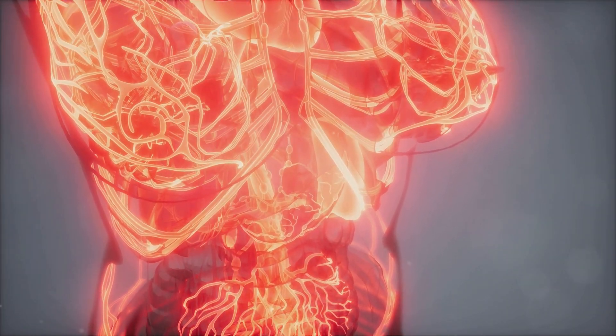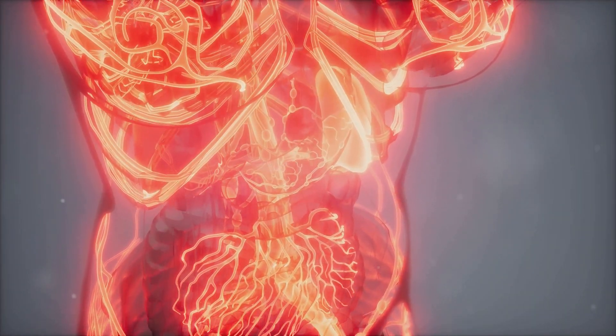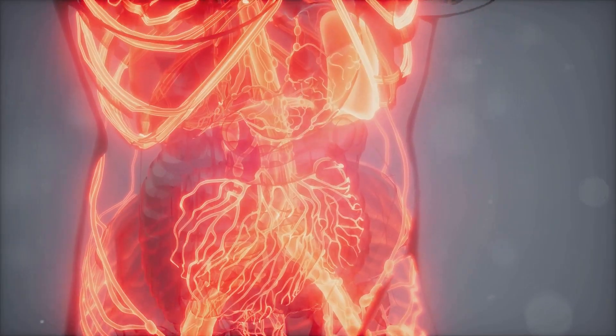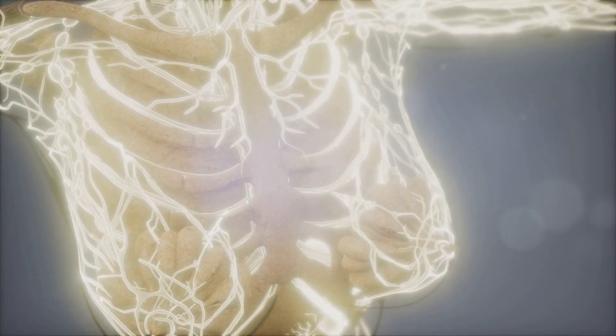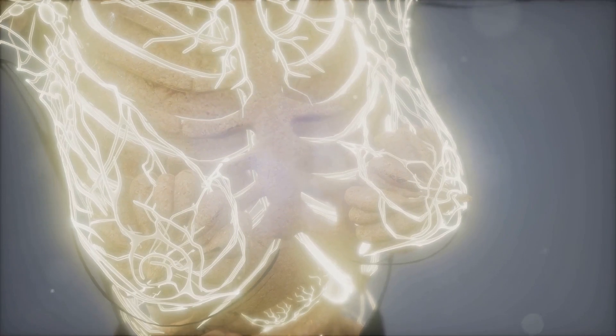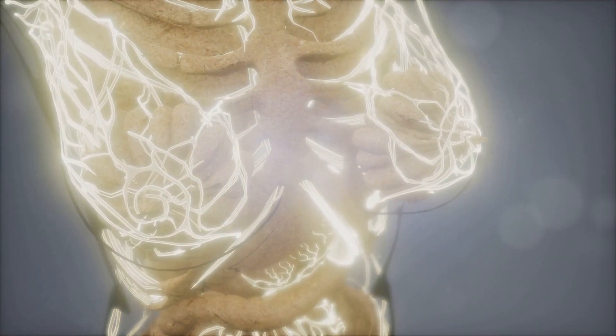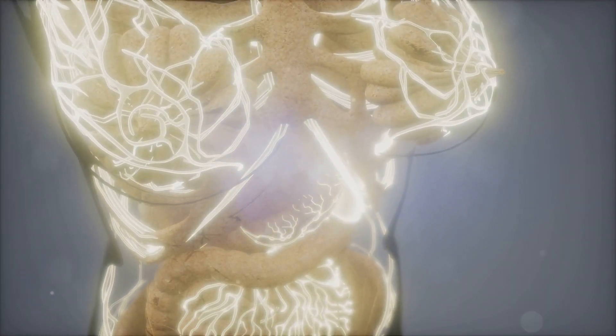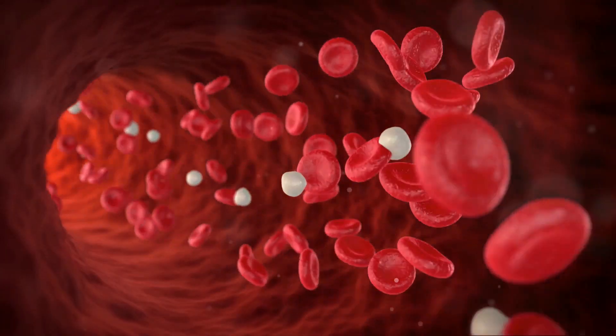Next, we dive into the circulatory system, the body's internal highway. This system is responsible for transporting blood, nutrients, oxygen and waste products to and from every cell in the body. And when I say every cell, I mean it.